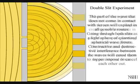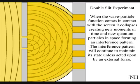Constructive and destructive interference between the waves will cause them to superimpose or cancel each other out. When this wave-particle function comes in contact with the screen, it will collapse creating moments of time and quantum particles in the shape of an interference pattern.